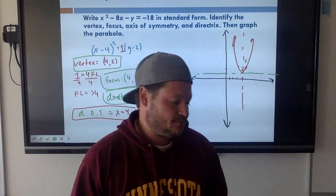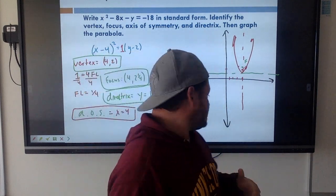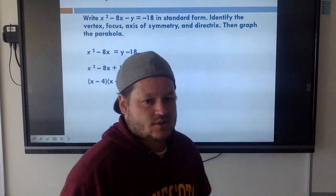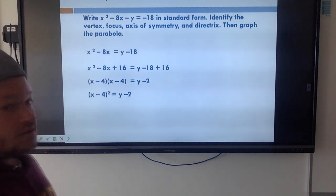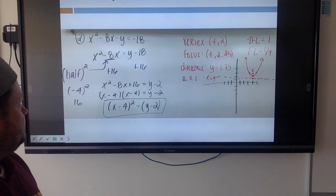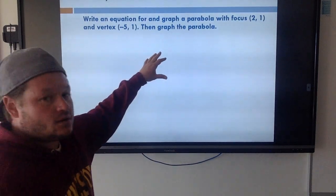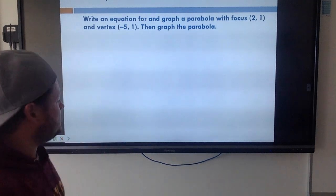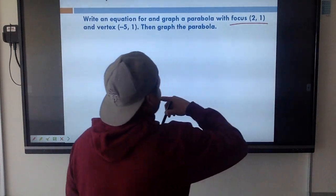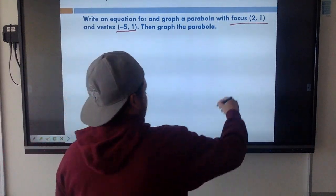Now we're going to shift gears a little bit. Now it's going to be me giving you a piece of information and you coming up with your own equation. Write the equation for and graph a parabola with a focus at (2, 1) and a vertex of (negative 5, 1). I'm just going to start by graphing those points.